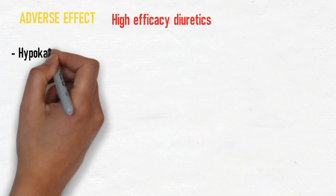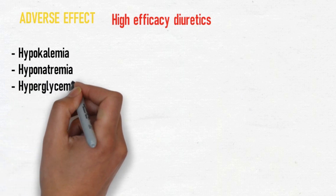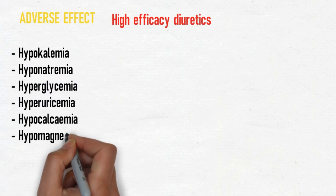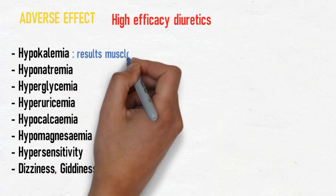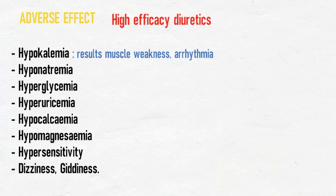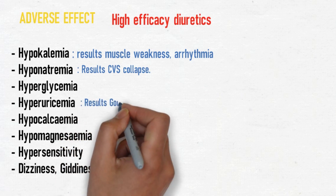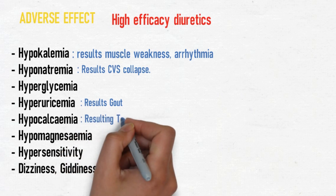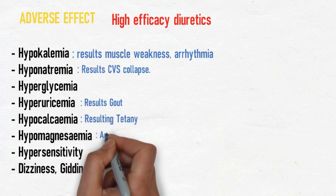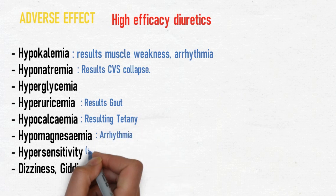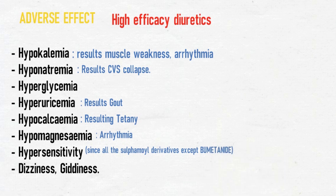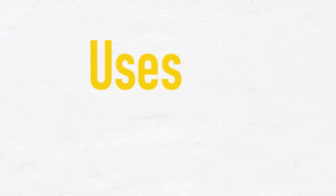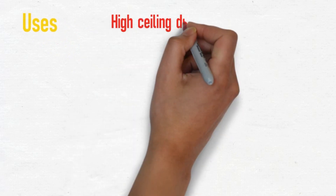The adverse effects are: hypokalemia, hyponatremia, hyperglycemia, hyperuricemia, hypocalcemia, hypomagnesemia, hypersensitivity, and dizziness. Hypokalemia results in muscle weakness and arrhythmia; hyponatremia causes severe cardiovascular collapse; hyperuricemia can cause gout; hypocalcemia causes tetany; hypomagnesemia causes arrhythmia. Hypersensitivity is due to the sulfonamide derivative component, except in bumetanide.